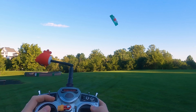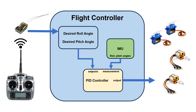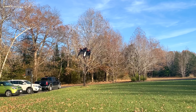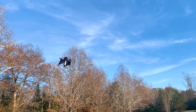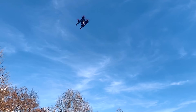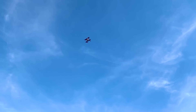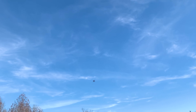There's a different type of control known as rate command, where instead of angles, we command angular rates. This is what all the racing drones use to do all those crazy maneuvers, at the expense of it being a bit more difficult to fly.